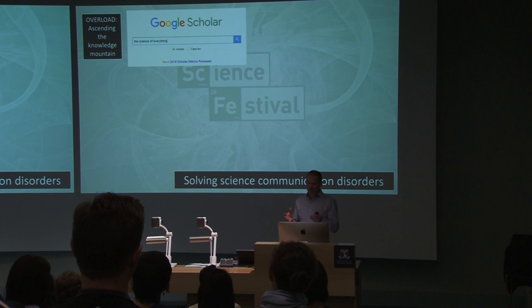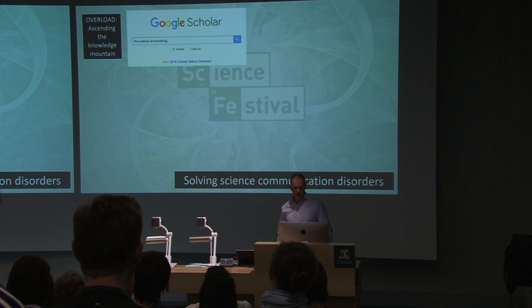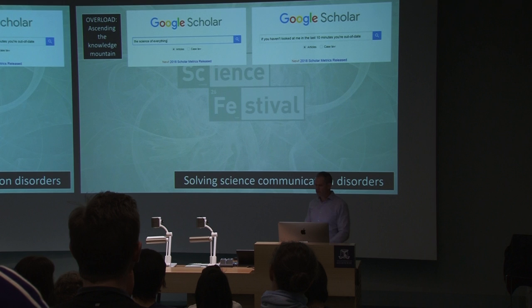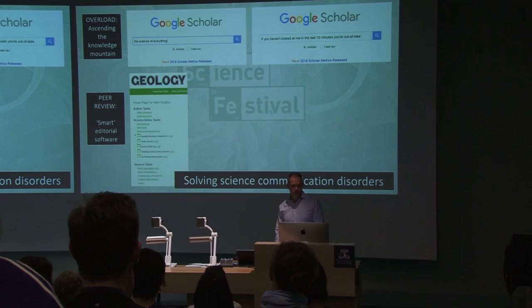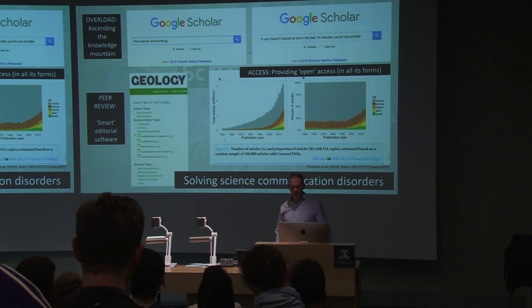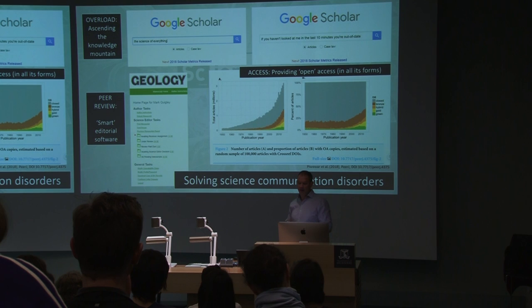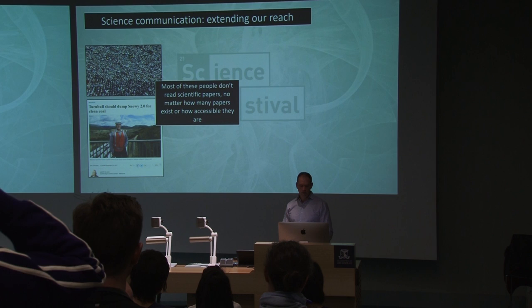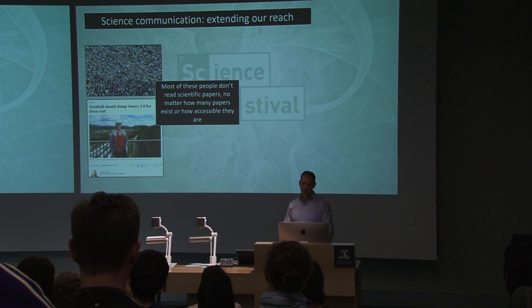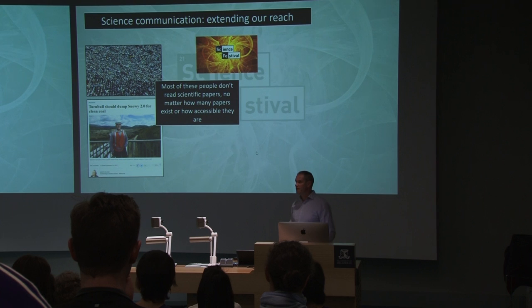We've been blessed with a whole bunch of advantages — things like Google Scholar, where the science of everything is available. But if you haven't looked at Google Scholar in the last 10 minutes, you're probably out of date. There's editorial software to help deal with giant volumes of literature, and a lot of discussion about providing open access to science. But the bottom line is that most people — the decision-makers — don't read scientific papers, no matter how many papers exist or how accessible they are.